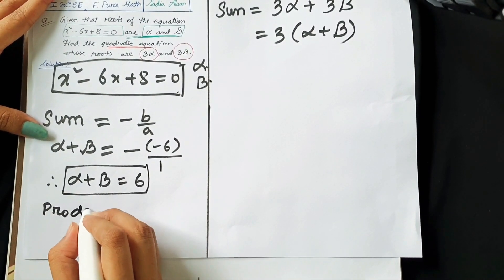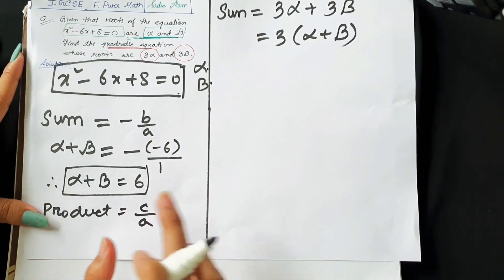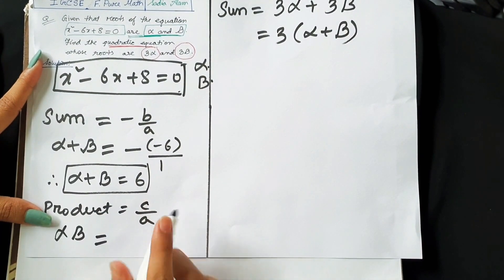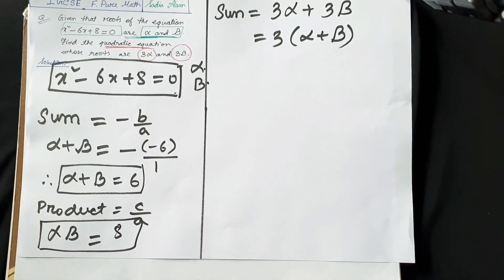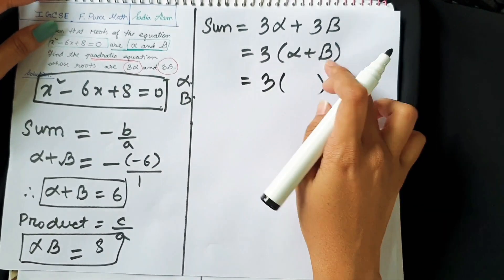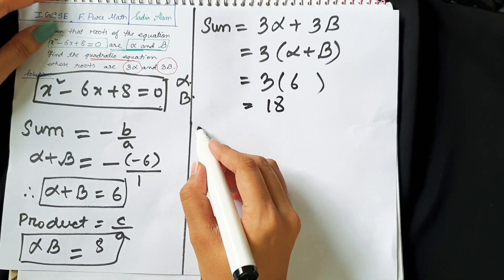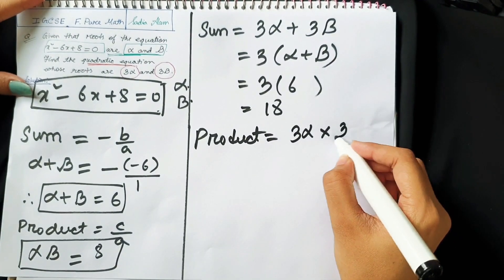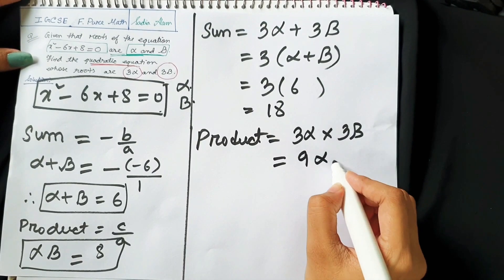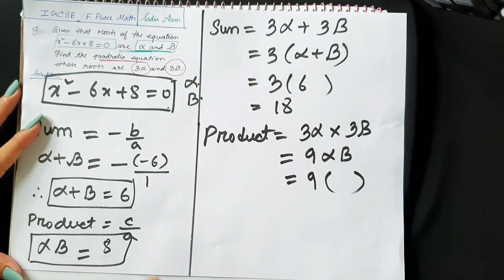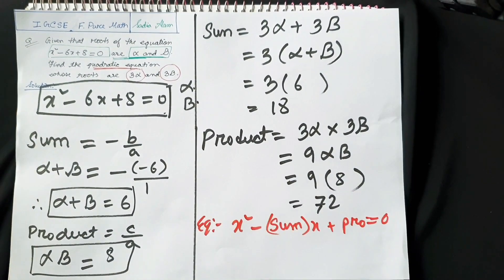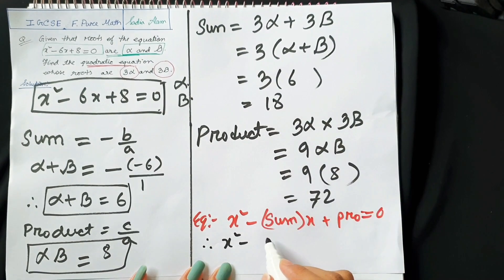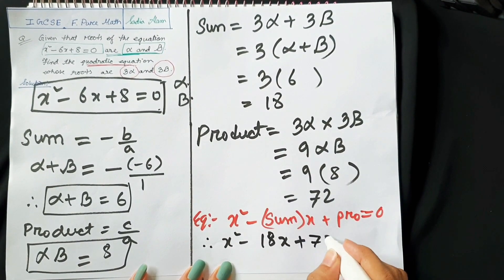Now we can substitute these values. The sum of the new roots is 3α plus 3β, which equals 3 times (alpha plus beta) equals 3 times 6 equals 18. For the product, 3α times 3β equals 9 times alpha times beta, and alpha times beta is 8, so the product equals 72. Using the formula, the new quadratic equation is x² minus 18x plus 72 equals 0.